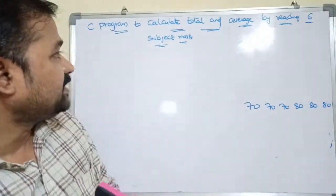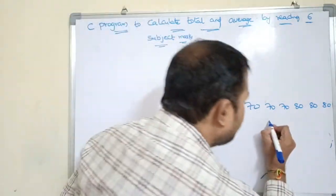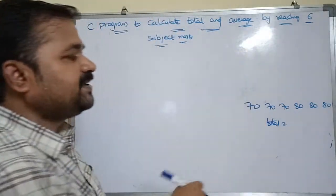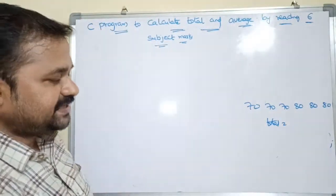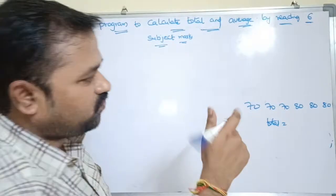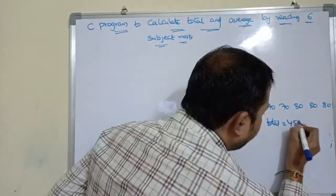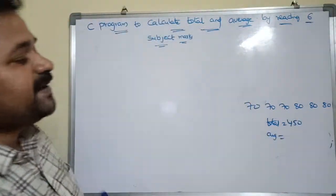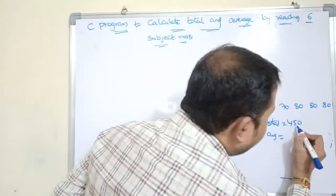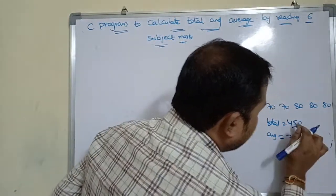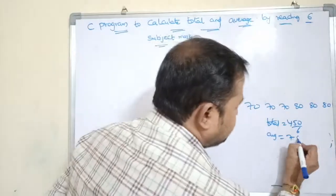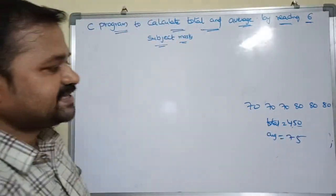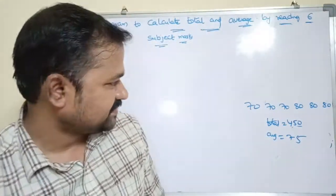Next we have to calculate total and average. So what is the total here? 70 into 3 means 210. 80 into 3 means 240. 210 plus 240 is nothing but 450. So what is the average here? 450 by 6, that is nothing but 75.